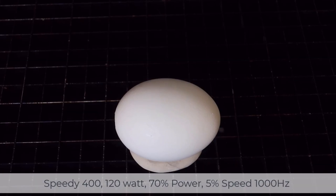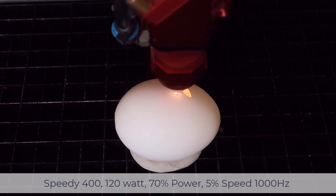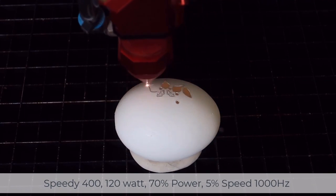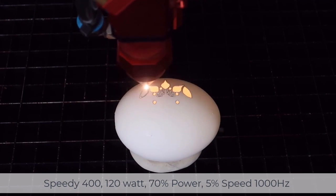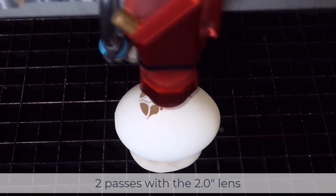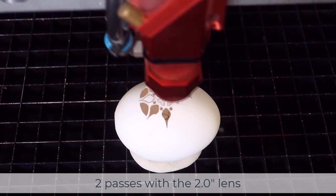With that in mind, in our next test, we've removed the rotary and placed the egg flat on our laser bed. This test was conducted on a speedy 400-120 watt running at 70% power and 5% speed, with 1000 Hz and 2 passes per cut line. We've used a standard 2 inch lens here, and the initial results were promising.